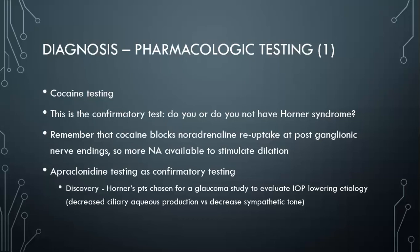The first step in workup is to confirm whether you have Horner syndrome. There are two confirmatory tests. The first is the cocaine test: cocaine blocks the reuptake of noradrenaline so more is available to stimulate alpha receptors and cause dilation. In Horner syndrome, sympathetic innervation is lost so there is poor basal release of norepinephrine — blocking reuptake has little effect and you get minimal dilation. The normal eye, with more norepinephrine being released, dilates after cocaine.